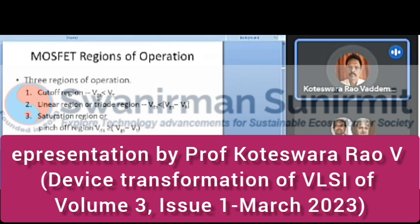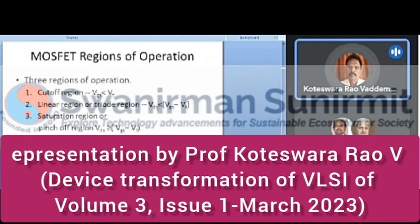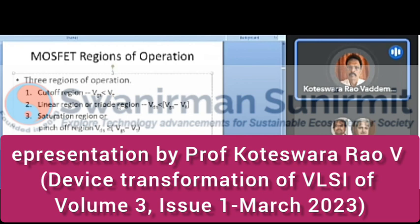In the cut-off region, when the gate-to-source voltage (VGS) is less than the threshold voltage (VT), no current flows through the transistor. Threshold voltage is the minimum VGS required to start conduction in the MOSFET. In the triode region, VDS is less than VGS minus VT, while VGS is greater than VT. In this region, drain current is almost proportional to drain voltage, resembling the triode characteristic — hence called the linear or triode region.